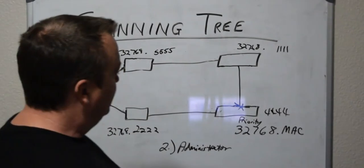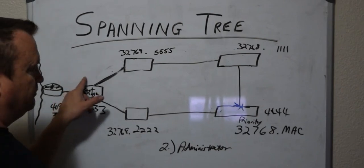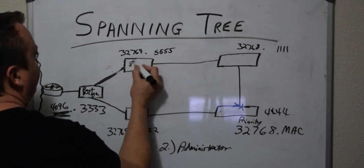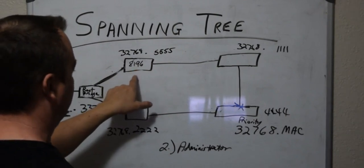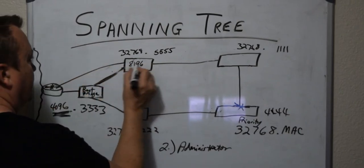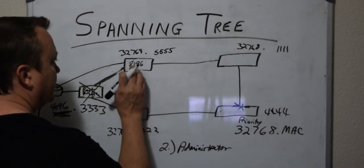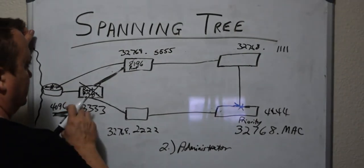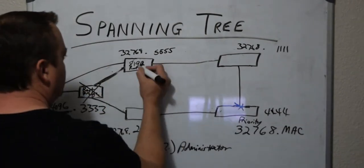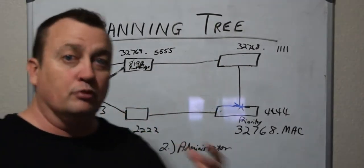It's always recommended that you as the administrator go in and configure the priority number on the switch you intend to be the root bridge. On more elaborate networks, you can set up a secondary root with a priority of 8,192 — slightly higher than the primary root but still lower than the others. If something happens to your primary root bridge and it goes down, the secondary would take over and traffic would be directed toward it. That's the basics of the root bridge and how it works.